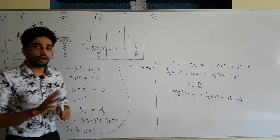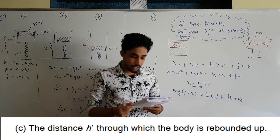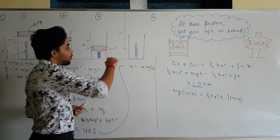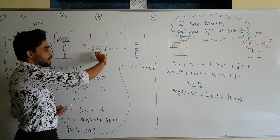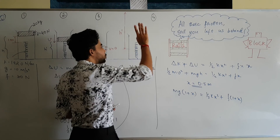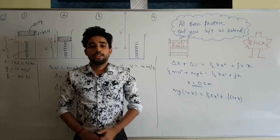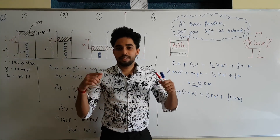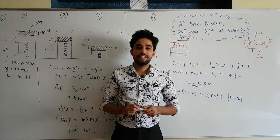For part three, we need to find the height h′ to which the block rebounds from the maximum compressed position. The spring's stored potential energy will push the block back up. I'll leave this for you to solve — put your answers in the comments below, and I'll see you in the next video. Thanks for watching!